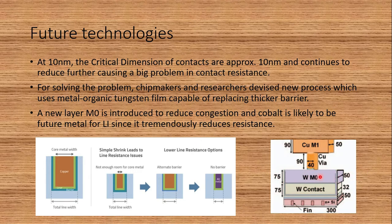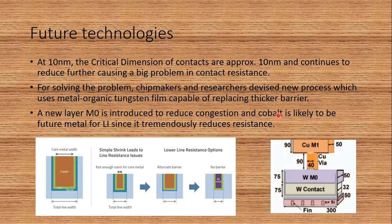A new metal layer M0 (also called metal zero or 'white metal') is introduced to reduce congestion. In the figure, a tungsten contact is shown with a tungsten M0 on top for local interconnects. Cobalt is likely to be the future metal for local elements, since it reduces resistance by 50% compared to copper. However, electromigration and reliability issues must be understood before using cobalt, and a new process flow must be designed — that's why the transition is taking a long time.